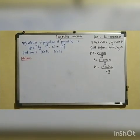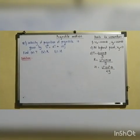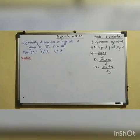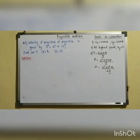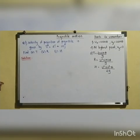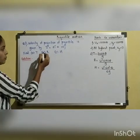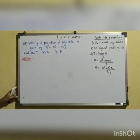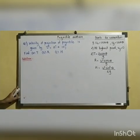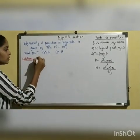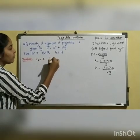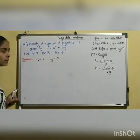The first question: the velocity of projection of a projectile is given by u = 5i + 10j (in vector form). We need to calculate time of flight, range, and maximum height. Since i-cap represents velocity along x and j-cap along y, we get ux = 5 m/s and uy = 10 m/s.